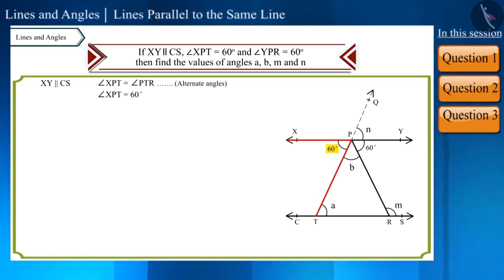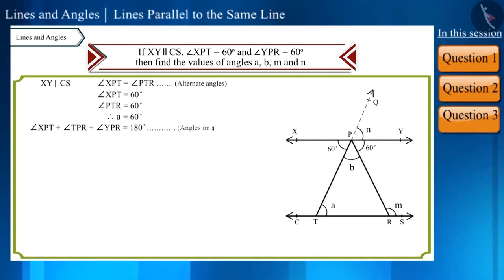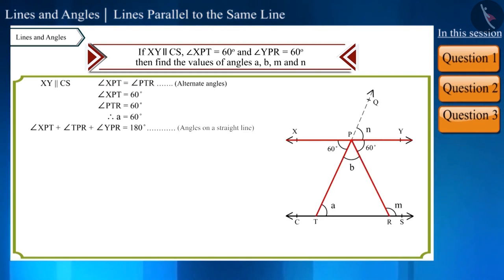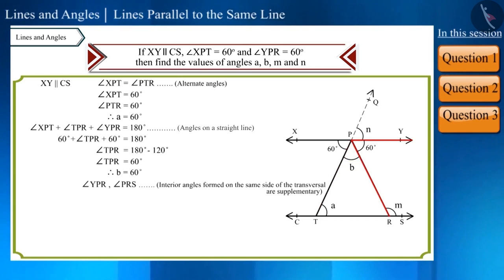We are given that the measure of angle XPT is 60 degrees, so the measure of angle PTR, or angle A, will also be 60 degrees. Angles XPT, TPR, and YPR together sum to 180 degrees as they are angles around a straight line. Knowing the values of angle XPT and angle YPR, we can find the value of B. Angle YPR and angle PRS are interior angles on the same side of the transversal, so they are supplementary angles.